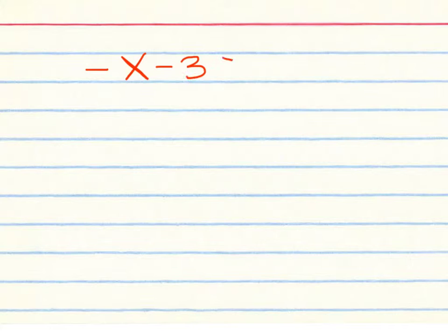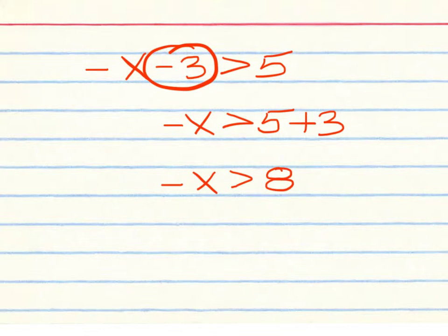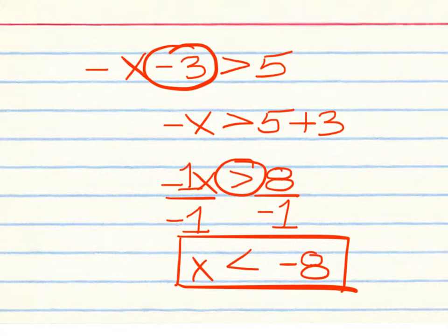Next: negative x minus 3 greater than 5. Keep the variable on the left, so it's negative x, and move the minus 3 to become plus 3 on the right — simplify the right to get 8. What you have next to the x is really a negative 1, so you must divide both sides by negative 1. You're left with x and negative 8, but any time you divide by a negative number in an inequality, you must flip the inequality sign so it points the opposite direction. x less than negative 8 is the answer.